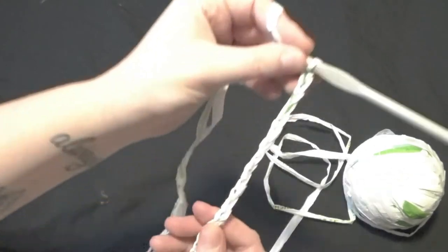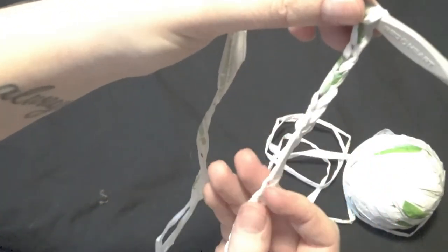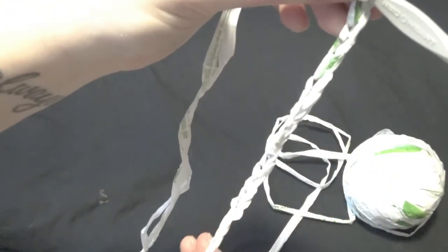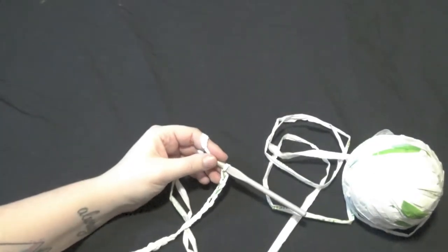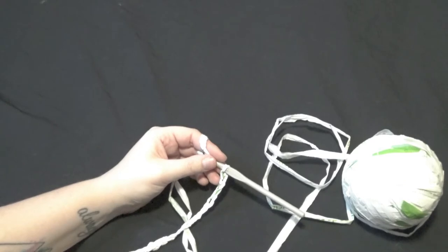So from there you should have something that looks almost like a braid, just like that. And the next thing we are going to do is our single crochet.